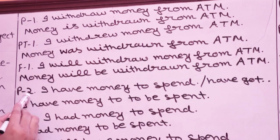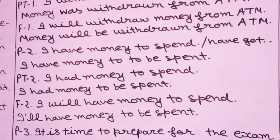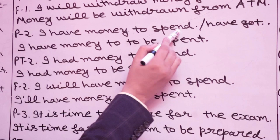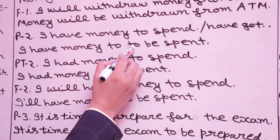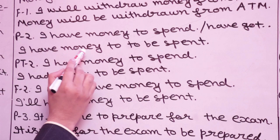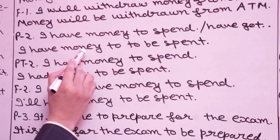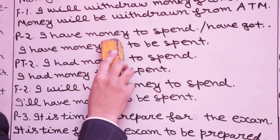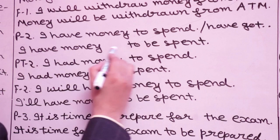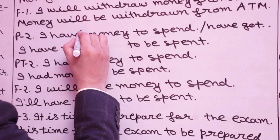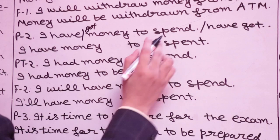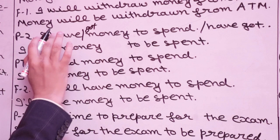P2 shows possession. Example: 'I have money to spend.' When the structure is have plus infinitive, we change 'to spend' to 'to be spent.' Passive: 'I have money to be spent.' In British English, 'I have got money to spend' becomes 'I have got money to be spent.' Both mean the same. PT2: 'I had money to spend' becomes 'I had money to be spent.'